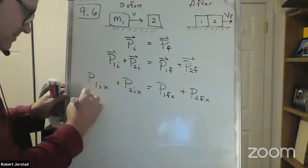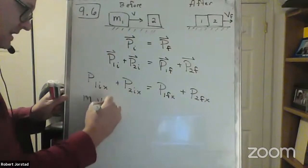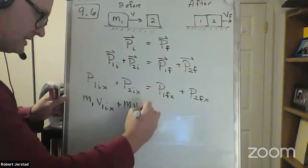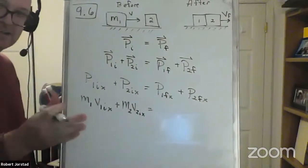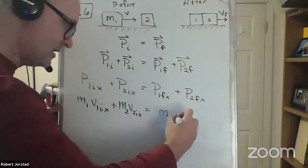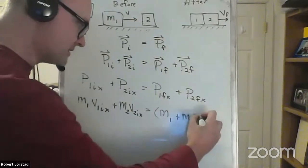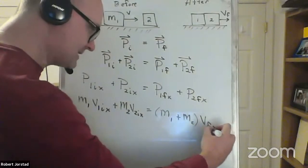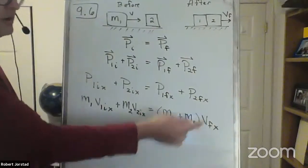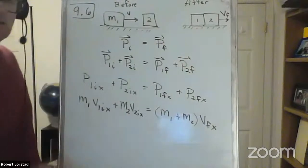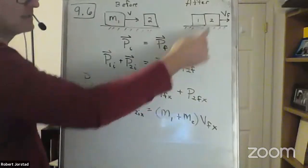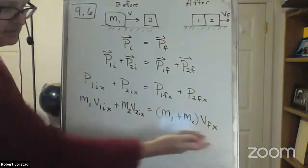So now we're almost there. Mass one V1 initial x plus mass two V2 initial x equals — we can actually say both of these have the same final speed. So: (mass one plus mass two) times V final x. Again, this is not always true — it's true for perfectly inelastic collisions, where two objects collide and stick together. Only then do they have the same final velocity.